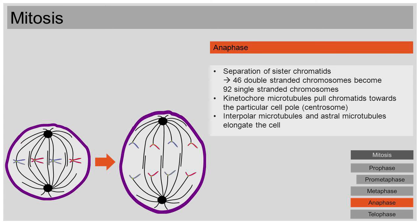During anaphase, the sister chromatids are separated. This is accomplished by the kinetochore microtubules, which shorten and thereby pull the chromatids to the particular centrosomes. The 46 double-stranded chromosomes become 92 single-stranded chromosomes. 46 of them are pulled to one side of the cell, the other 46 to the other side. Now the identical genetic information is existent on both sides of the cell. The interpolar microtubules and the astral microtubules elongate the cell and thereby move the separated chromatids further apart.